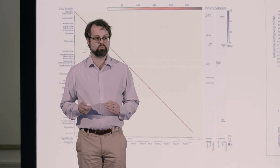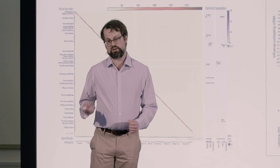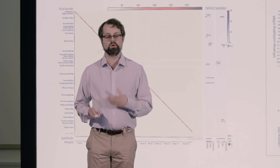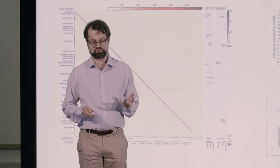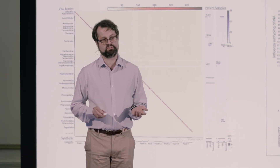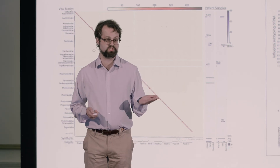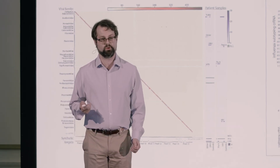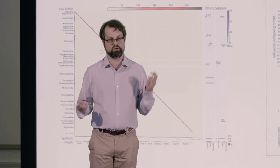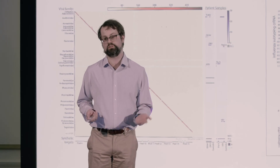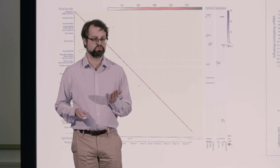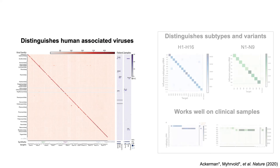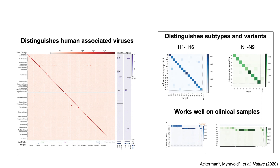We also did some work at the subspecies level, differentiating different subtypes or strains of influenza virus. We picked H1 through H16 and N1 through N9, because those are the subtypes of influenza that infect birds — the so-called bird flu or avian influenza. And as you can see, again, we've got some really nice diagonal lines indicating we can indeed differentiate those different subtypes.